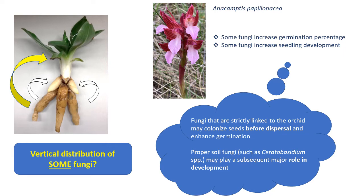It is possible that fungi strictly linked to the orchid may colonize seeds before dispersal and play a primary role in their germination, while proper soil fungi such as many Ceratobasidium species may play a subsequent but still major role in seedling development.